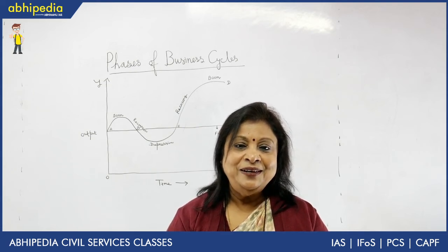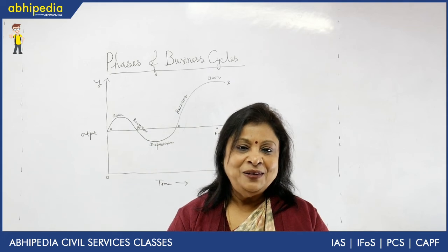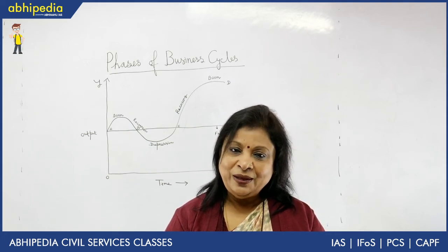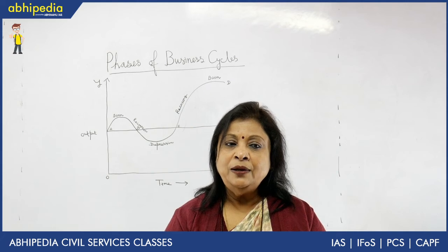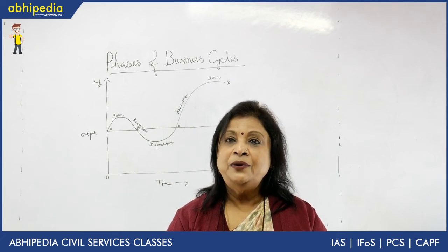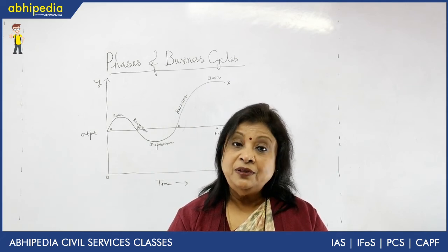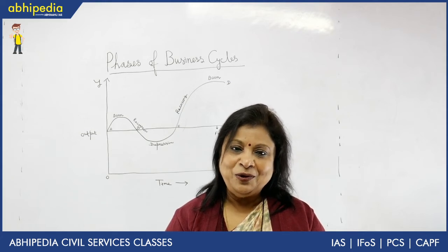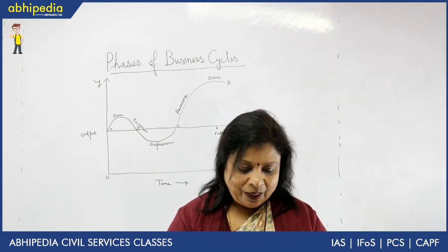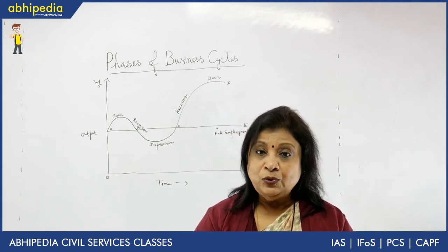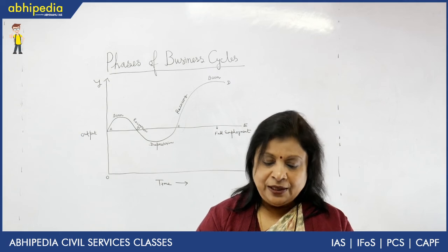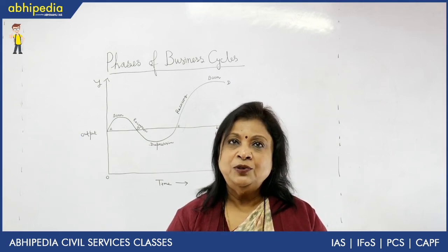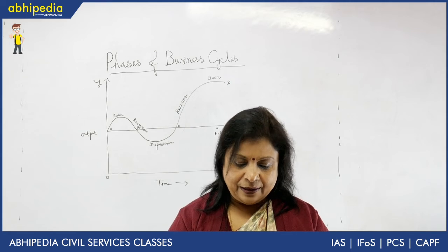By borrowing, purchasing power is curtailed — less demand causes the price level to fall, thereby controlling inflation during boom. During depression, the government returns the money with interest to increase the aggregate demand of the economy. These are the three tools with which various phases of the trade cycle can be tackled.